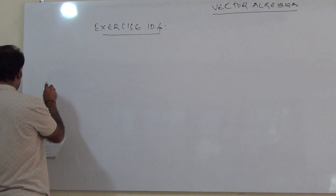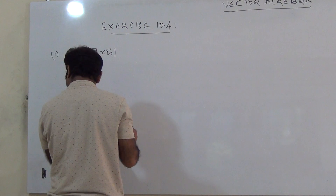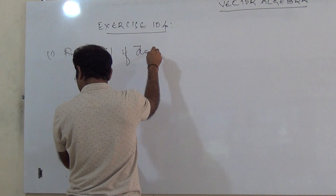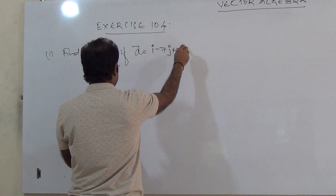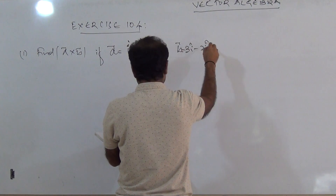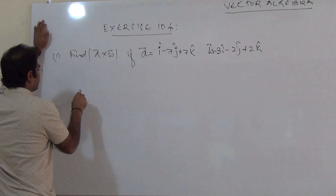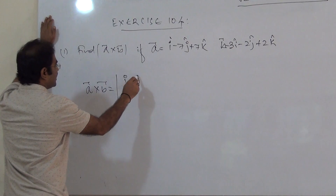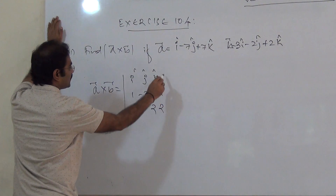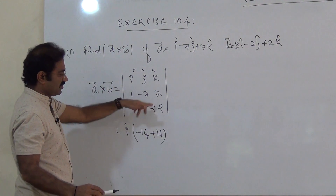Problem 1: Find the magnitude of A×B, given A = i − 7j + 7k and B = 3i − 2j + 2k. First, find A×B using the determinant with i, j, k in the first row; 1, −7, 7 in the second row; and 3, −2, 2 in the third row. i into (−14 − (−14)).